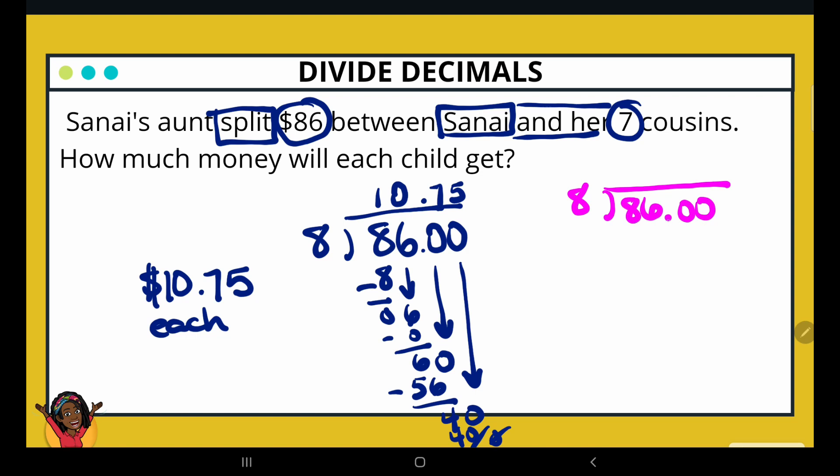8 goes into itself. Well, before we do that, let's move our decimal point up into the quotient. 8 into itself is 1. 8 times 1 is 8. Nothing left over. I bring down the 6. Now, 8 cannot go into 6. So I must place that 0 here. 8 times 0 is 0. 6 minus 0 is 6. Now, I can bring down that 0. 8 goes into 60, 7 times. 7 times 8 is 56. 60 minus 56 leaves us with a 4. And then we have that other 0 that we can bring down. Now, if we didn't remember to write those 0s, that's okay. You could have added the 0s here so that you can continue dividing. So 8 into 40 is 5. 5 times 8 is 40. And that's our final answer. $10.75 each.